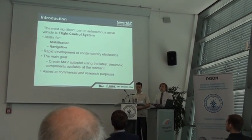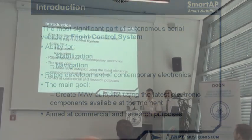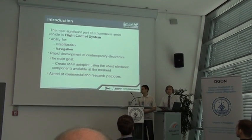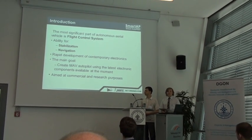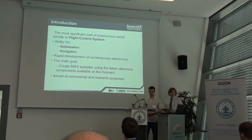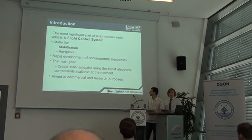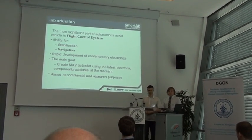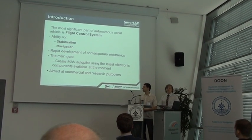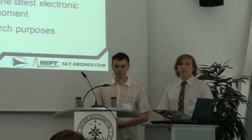The most significant part of a micro air vehicle or autonomous aerial vehicle is its flight control system, which gives the ability for both stabilization and navigation. Nowadays there are a lot of autopilots on the market, many in the budget price range, making implementation easy and affordable. Many are also open source, allowing you to study how they work and make your own changes. However, due to the rapid development of contemporary electronics, such devices become obsolete very fast. The best way to experience something is to do it yourself, so we decided to build our own autopilot for both rotary wing and fixed wing MAVs from scratch.